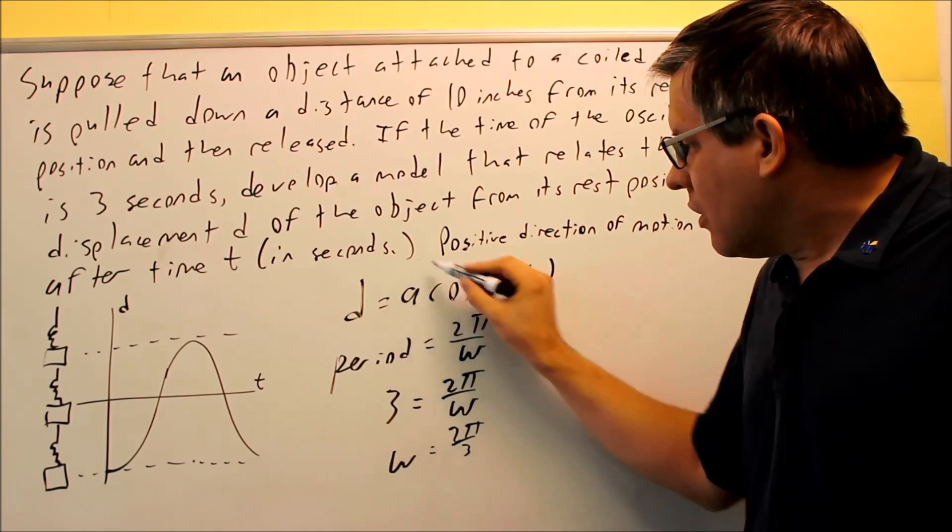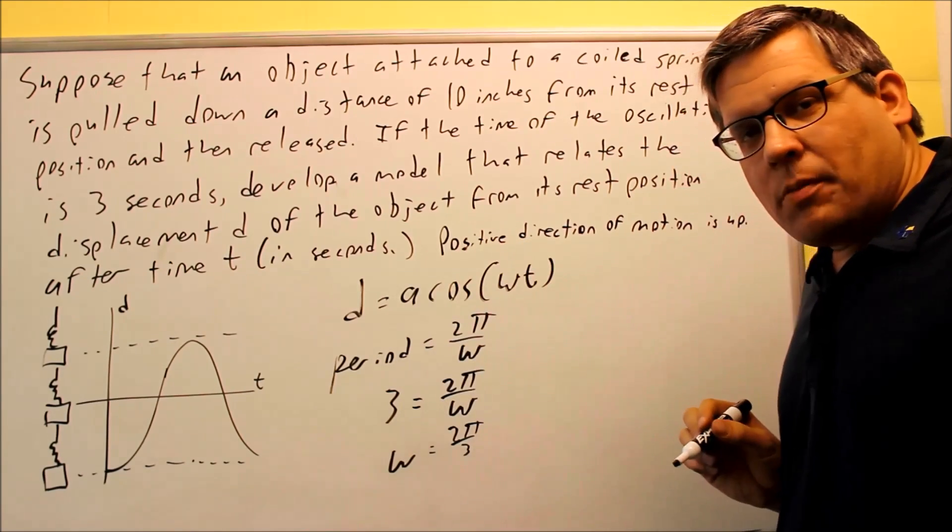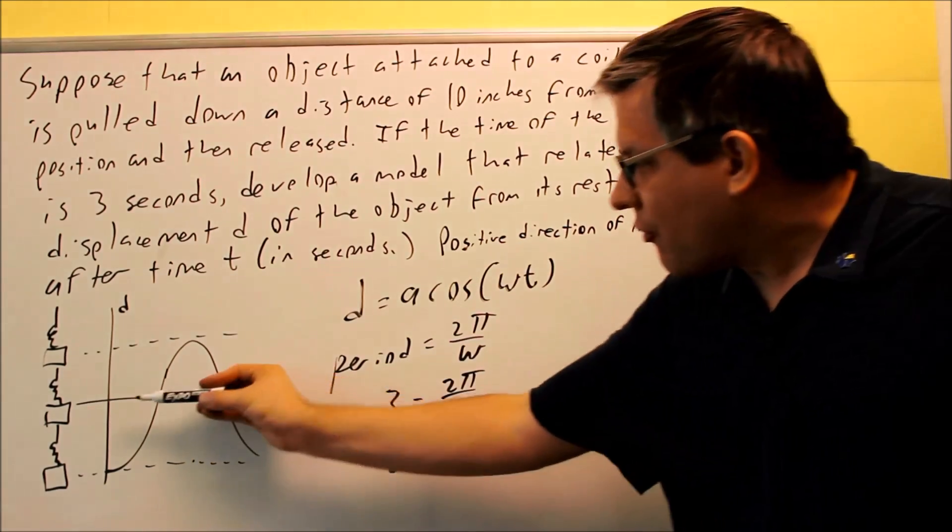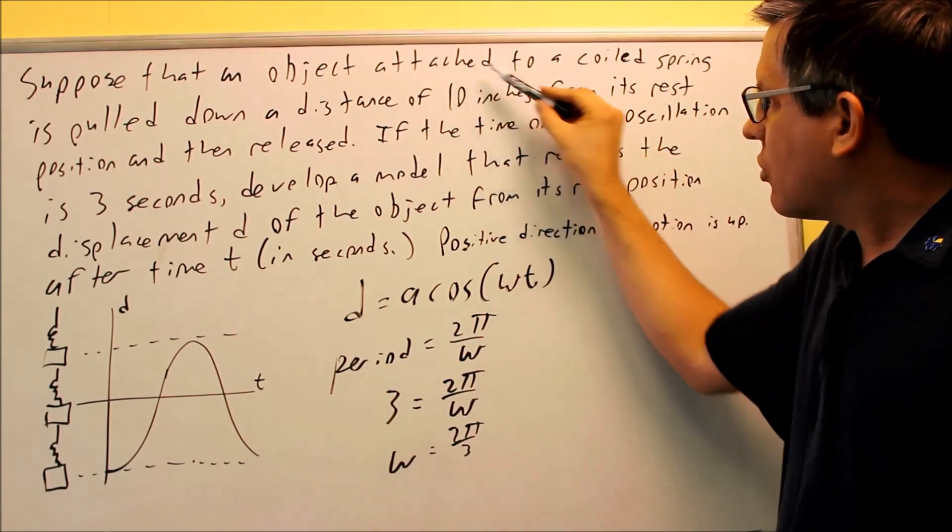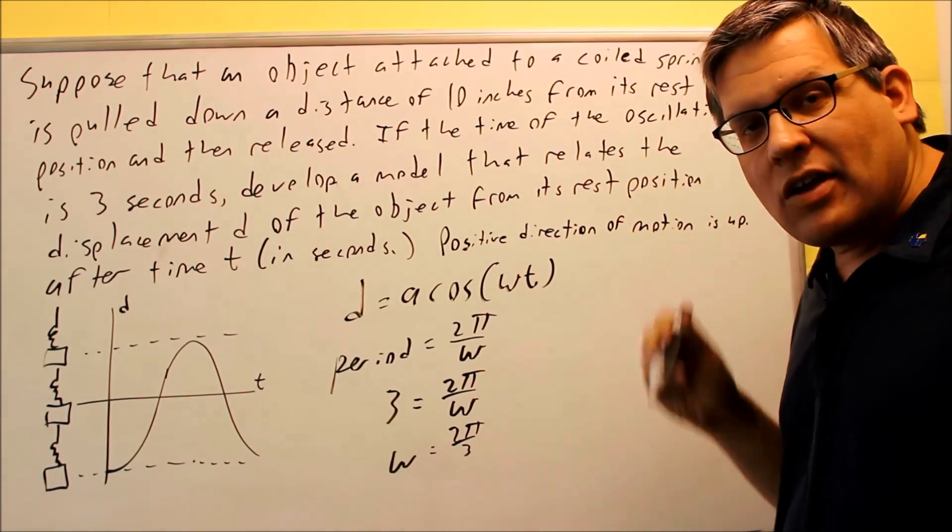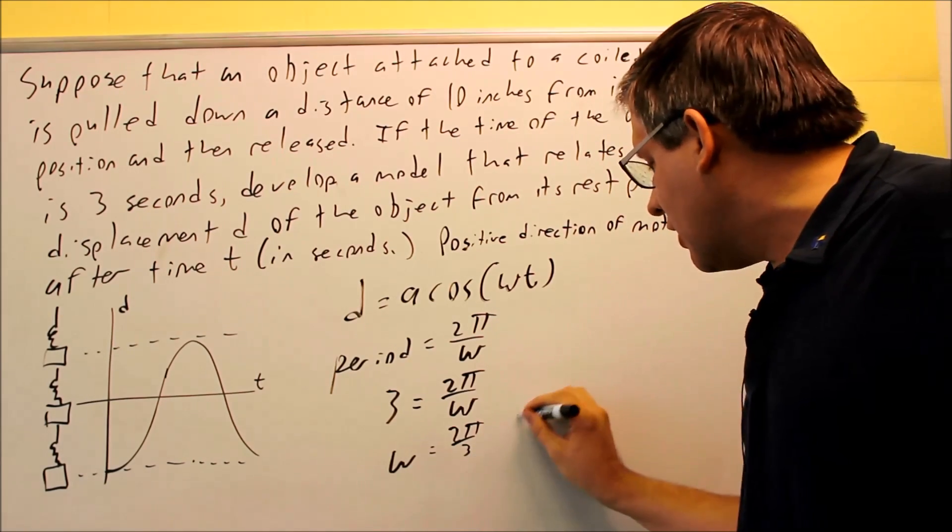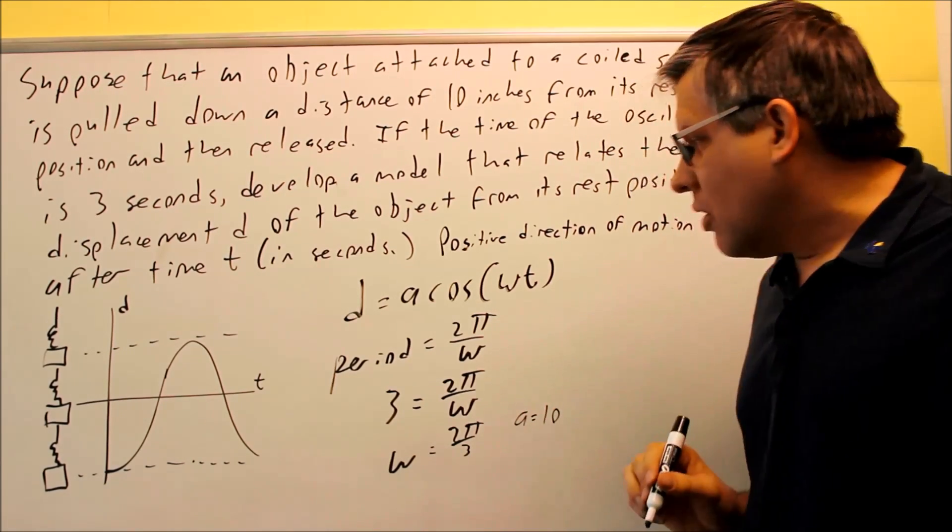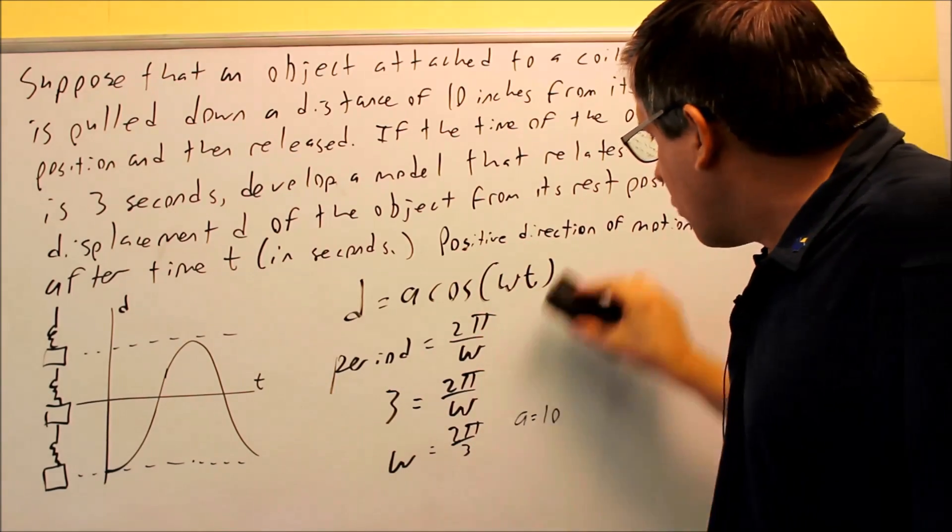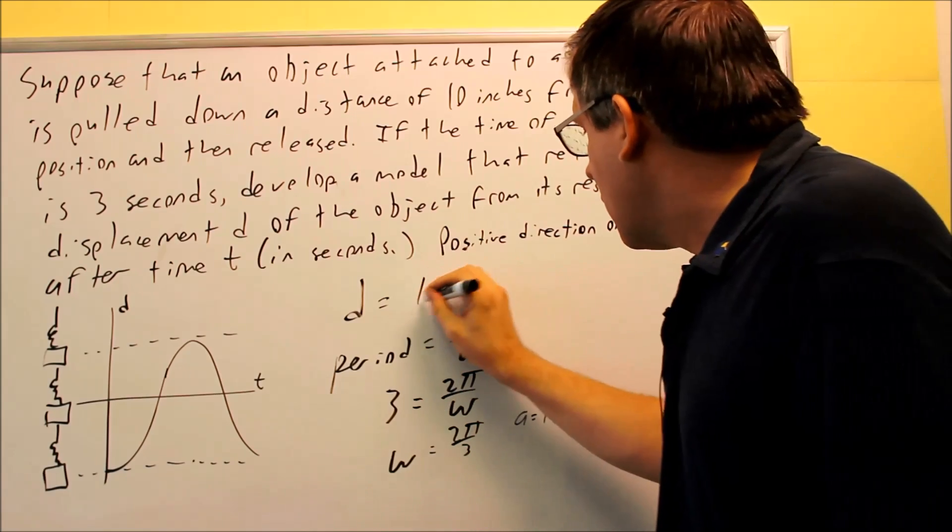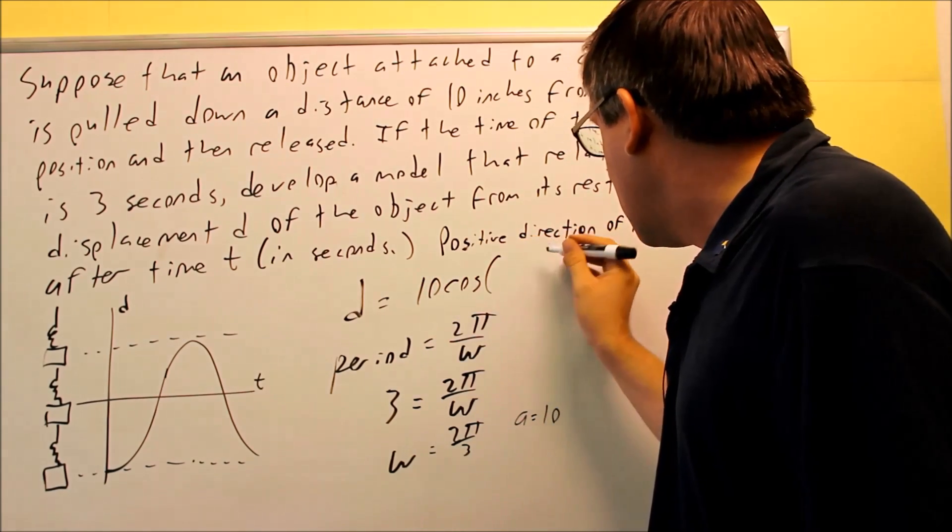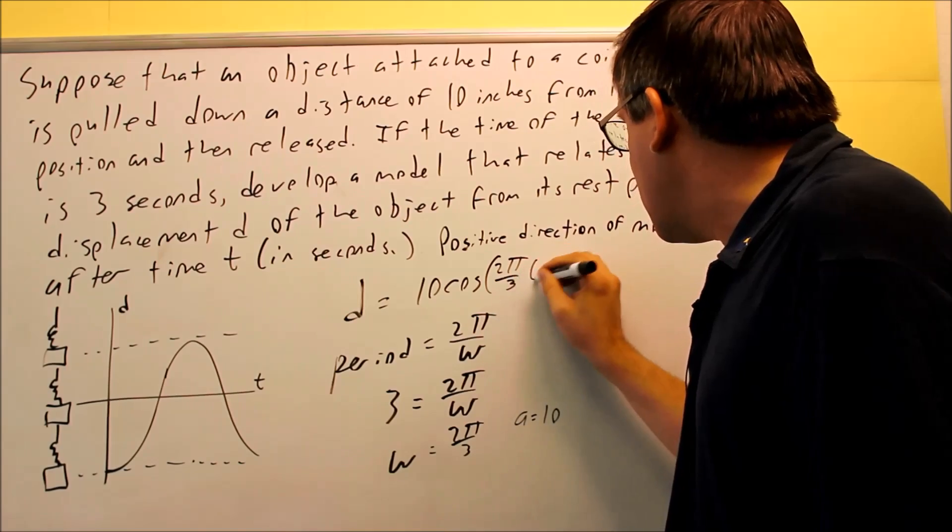Now we have to figure out the amplitude. The amplitude is how far down you actually pull it. We have 10, so your a is going to be 10 in this case. So when we rewrite the formula, let's go ahead and rewrite this now, putting the pieces back in. I have 10 cosine 2π over 3t.